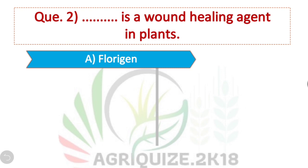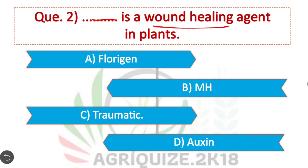Question 2: Which compound is a wound healing agent in plants? Traumalin is a wound healing agent in plants. Option C is correct.